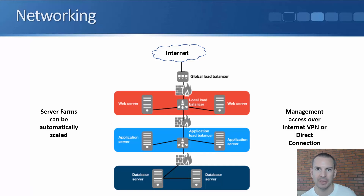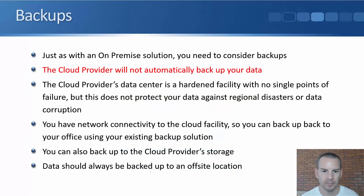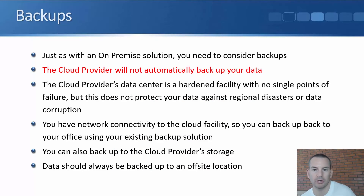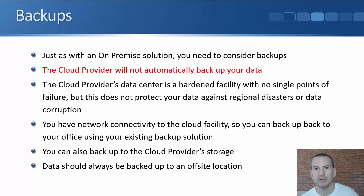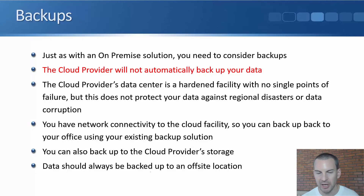You need to take backups in case you need to restore from a previous version. Since you have network connectivity to the cloud facility, one option is to back up to your on-premises office and use your existing backup solution — such as backing up to tape. You can also back up to the cloud provider's storage. If you do that, make sure you're backing up to a different data center than where your servers are located, because if a regional disaster takes out the entire data center, backups in the same location won't help. Data should always be backed up to an off-site location.